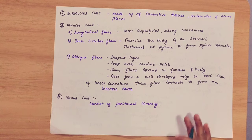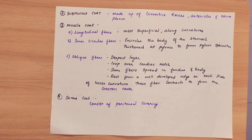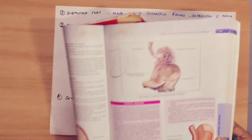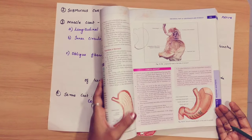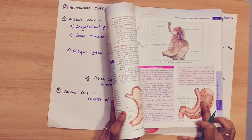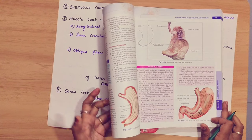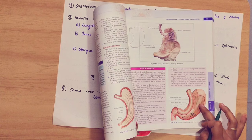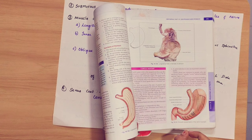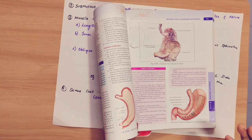Coming to the oblique fibers — oblique fibers are the deepest fiber. They loop over the cardiac notch. Some fibers spread in the fundus and body. The rest form a well-developed ridge on each side of the lesser curvature. These fibers contract to form the gastric canal. Oblique fibers are more along the lesser curvature, as you can see here.